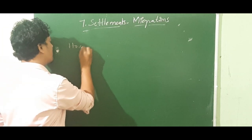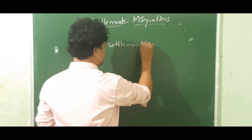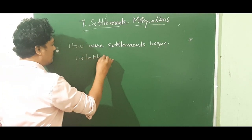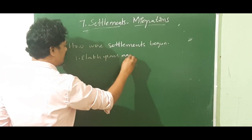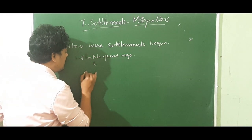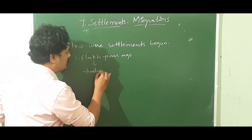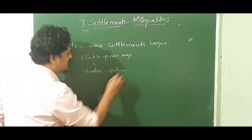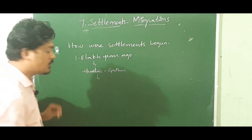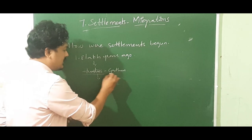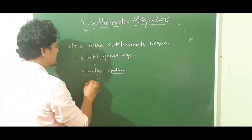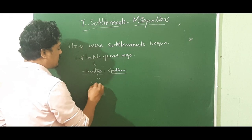Now, how were settlements begun? Around 1.8 lakh years ago or more, people lived as hunters and gatherers — by hunting animals and gathering food. Slowly, the human being started living at one place, which is called settlement. He left his nomadic life of searching for food by hunting animals and started settling at one place.